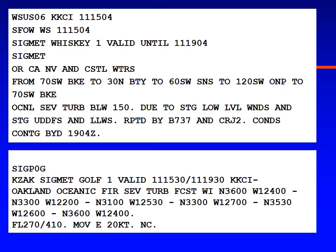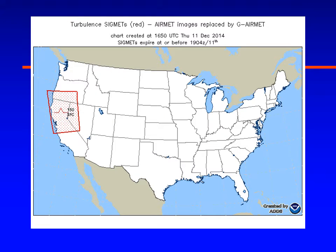Also off the coastal waters, there was an international SIGMET — SIGMET Gulf 1 — for the Oakland Oceanic flight information region, for severe turbulence from flight level 270 to 410. So this is your map of the SIGMET area for northern California and also into Oregon.